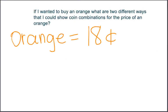If I wanted to buy an orange, what are two different ways that I could show coin combinations for the price of an orange? The orange costs eighteen cents. What are two different ways to show eighteen cents — not eighteen pennies? What are other ways to show the price besides eighteen pennies? Two different ways.